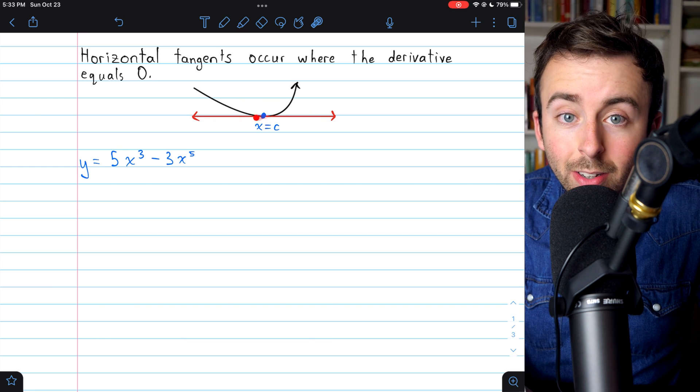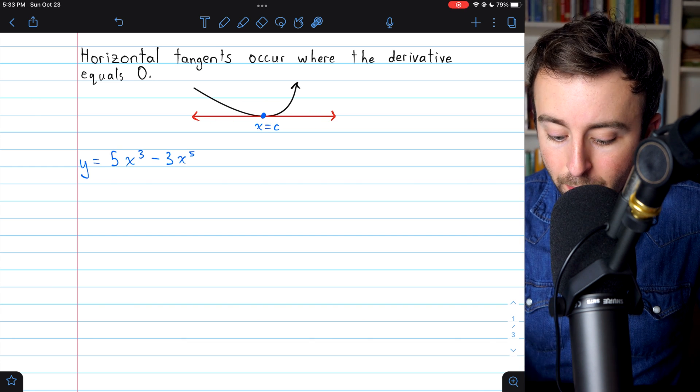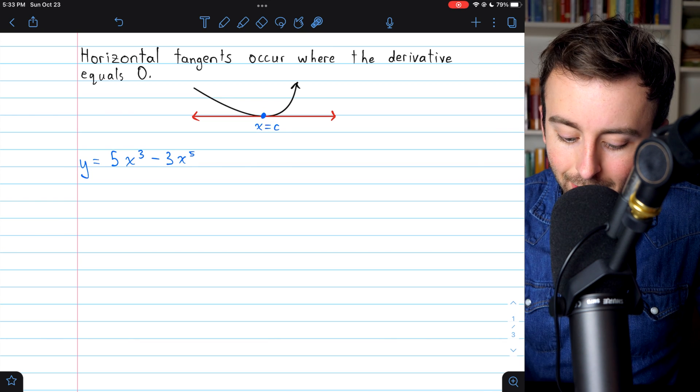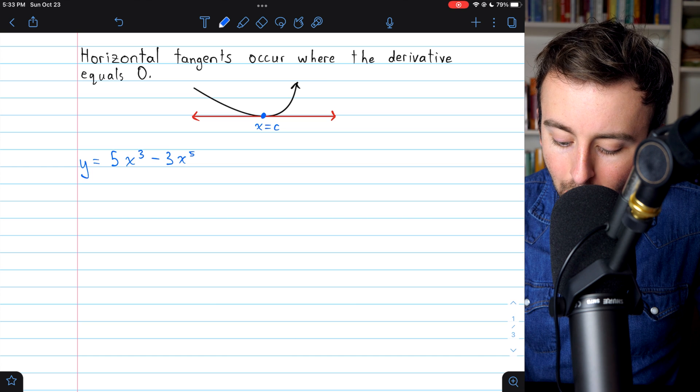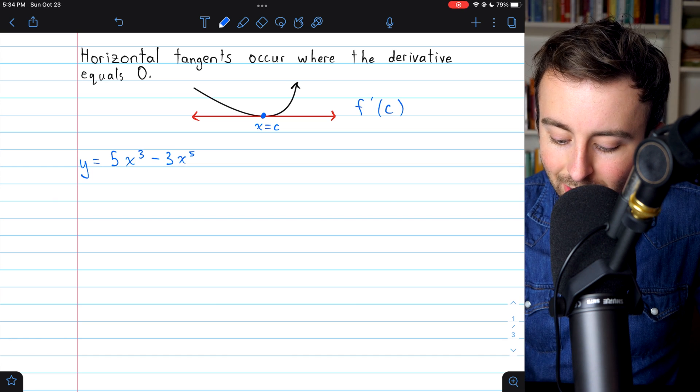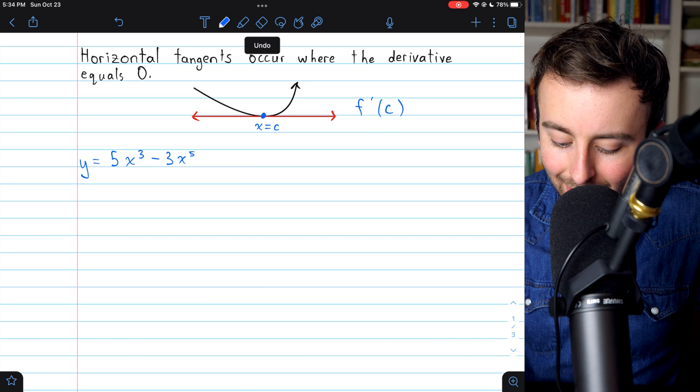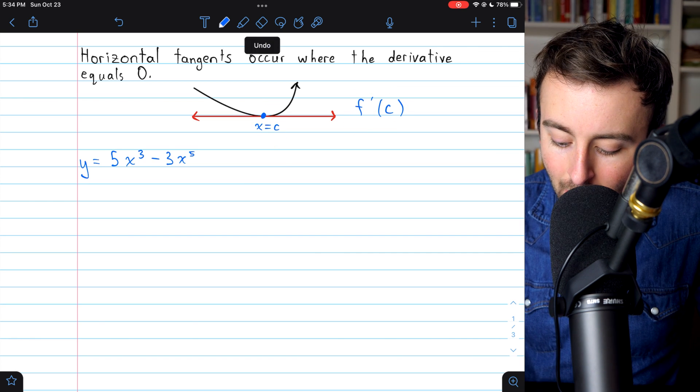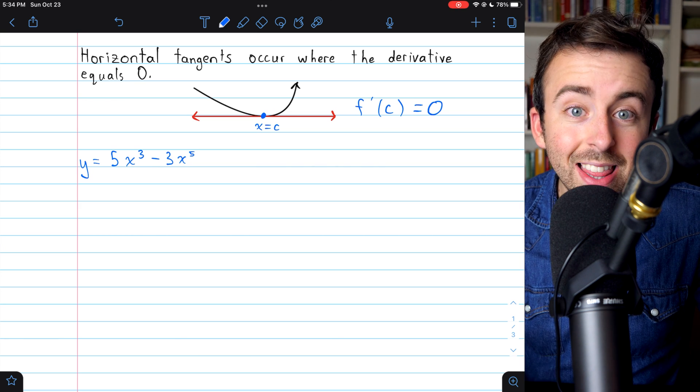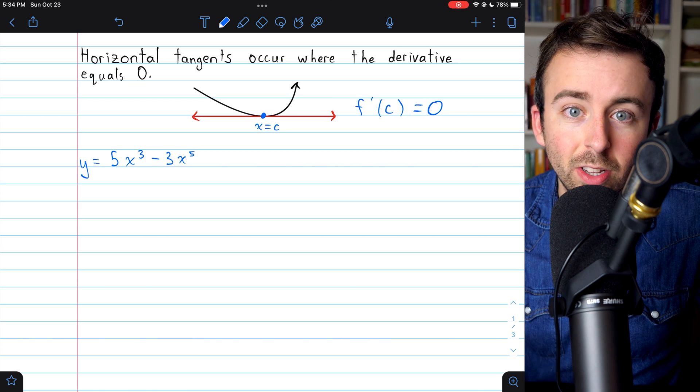And what's making it horizontal is that its slope, and thus the slope of the curve at this point, is 0. So we could write for this curve, f prime of c, the derivative of the curve at this x-coordinate c, must be equal to 0. Where the derivative is 0, that's where the horizontal tangents are going to be.